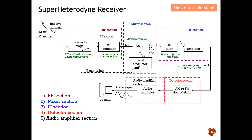This diagram shows the block diagram of the superheterodyne receiver. The signal, whether AM or FM, is picked up by the receiver antenna. The role of the antenna is to convert the electromagnetic wave into an electrical signal. This electrical signal is then passed to the RF section.